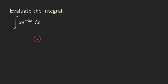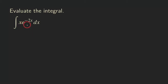Hello everyone. Let's look at this integral here. We are going to use integration by parts to integrate this function, and the reason is that you can see it's a product of two types of different functions. One of them is x, and the other one is the exponential function e to the negative 2x.